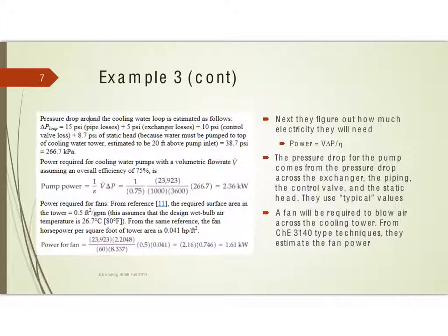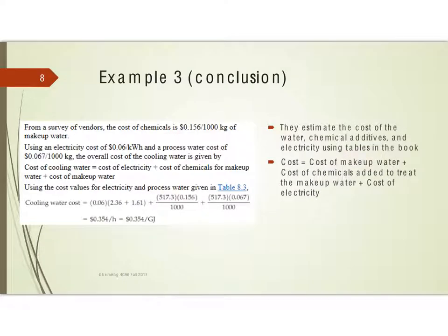And then, they also need to have the fan to blow the water across the cooling tower. And they just do some simple estimates for that. Then, they just estimate the costs. So, we've got water, we have some chemical additives, we've got electricity. They use the tables in the book. And they add all those up, and they come up with a cost of 35.4 cents per gigajoule, is their 2001 estimate of the cost of cooling water.